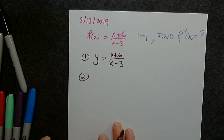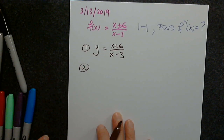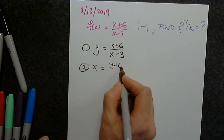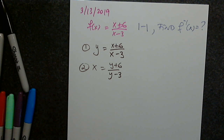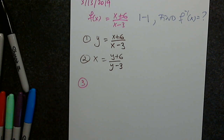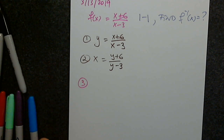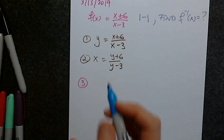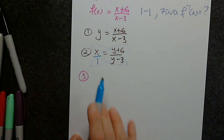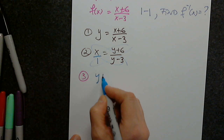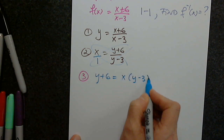Step 2: I interchange x and y. In step 3, I have to solve for y. Can anyone give us an idea how to solve for y? You can say it's a proportion. Cross-multiplying: x times (y - 3) equals y + 6, which gives us y + 6 = xy - 3x.